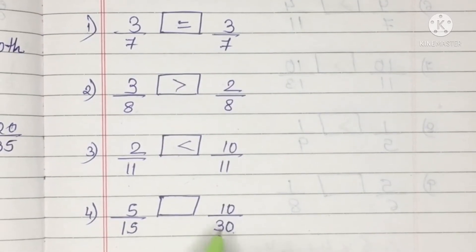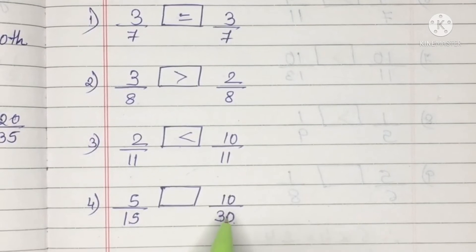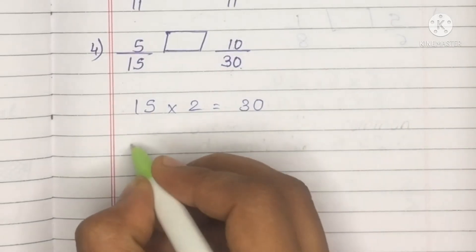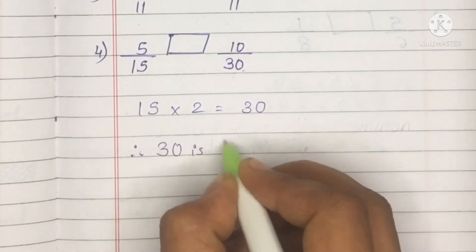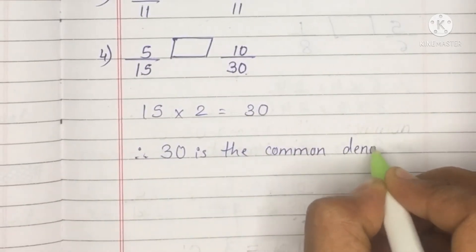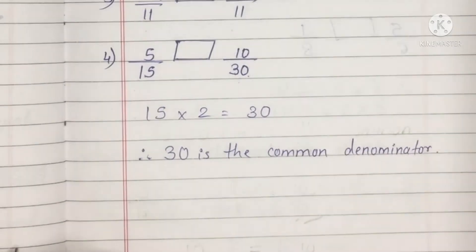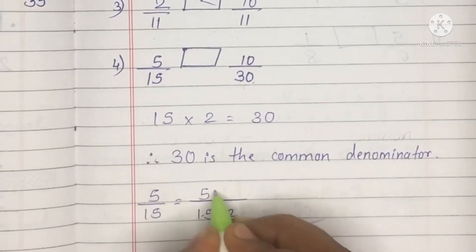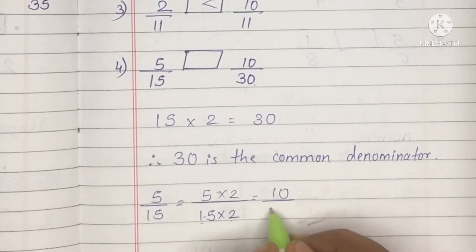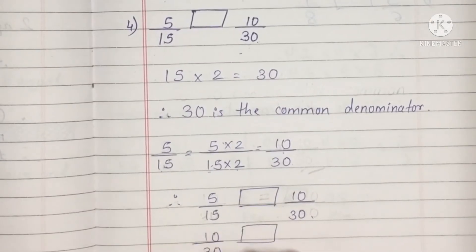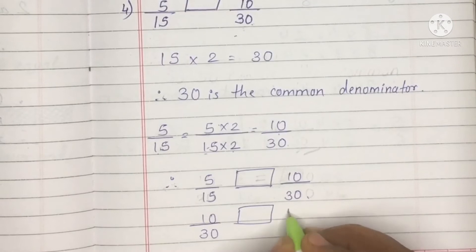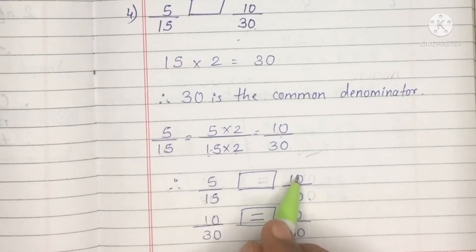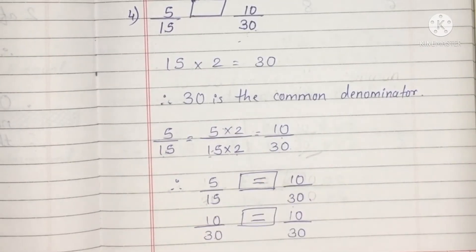Number 4 is 5 upon 15 and 10 upon 30. Neither numerator nor denominator is common, so we make the denominator common. 30 appears in the table of 15 — 15 times 2 is 30. So we multiply 5 upon 15 by 2: numerator becomes 10, denominator becomes 30. Now 10 upon 30 compared to 10 upon 30 — both are the same, so we put the equal to sign.